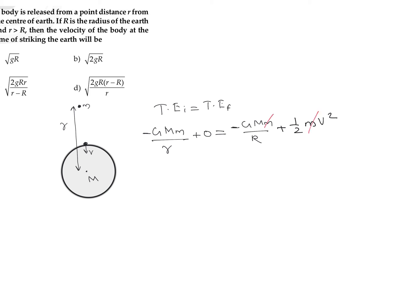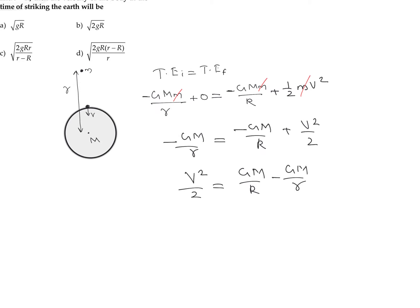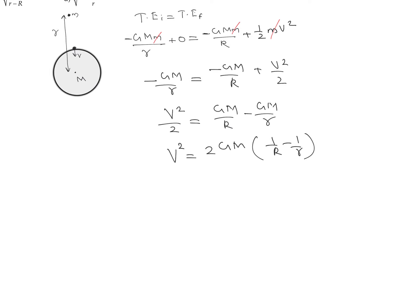We cancel the mass m from all terms. We can write: minus GM divided by r equals minus GM divided by capital R plus v squared divided by 2. Rearranging, v squared divided by 2 equals GM divided by capital R minus GM divided by small r. So v squared equals 2GM times the quantity 1 over R minus 1 over r.